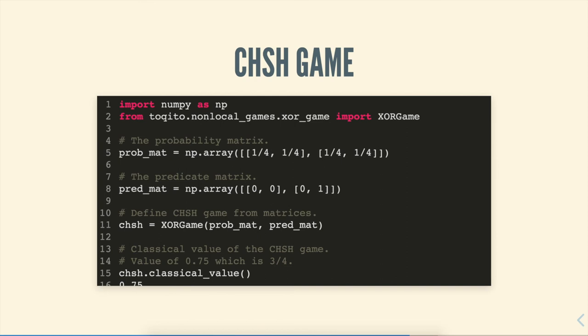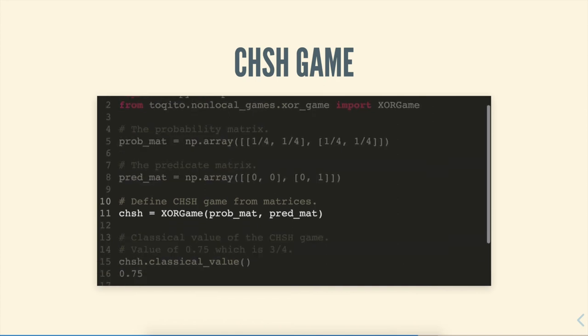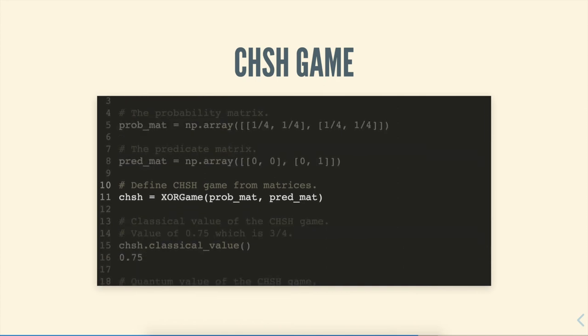The predicate matrix is simply a matrix that indicates what the expected winning outcome for Alice and Bob should be in the case that they get a question pair. For instance, the top left entry in this matrix corresponds to the case where Alice and Bob get 0, 0 as a question, and the expected answer there should be Alice and Bob's response equaling 0. So A XOR B needs to be equal to 0 in that particular case, and so on for the other entries in this predicate matrix. Now one can specify an XOR game, any XOR game, using these two objects. And the way that we specify these particular two, they define the CHSH game. We pop those two matrices into this XOR game class and define an object called CHSH, which is just an object that we'll use to calculate both the classical and quantum value of this game.